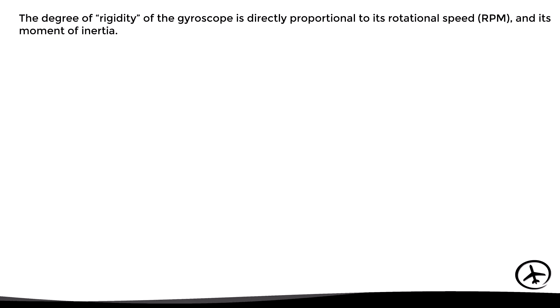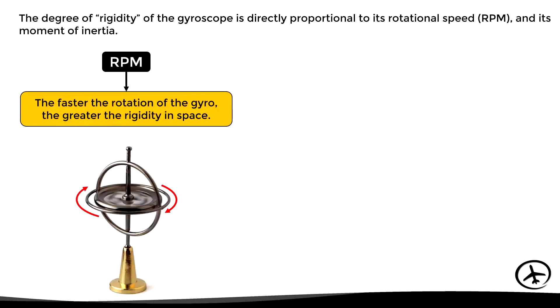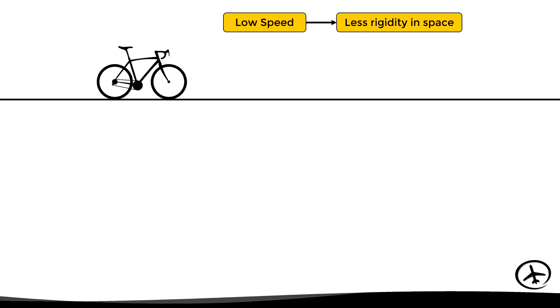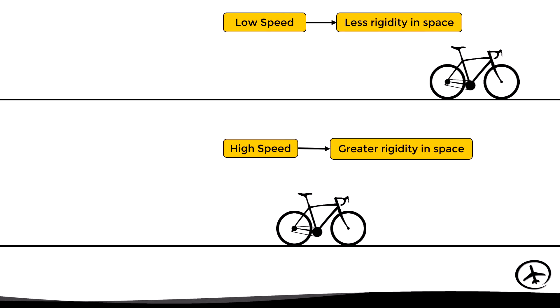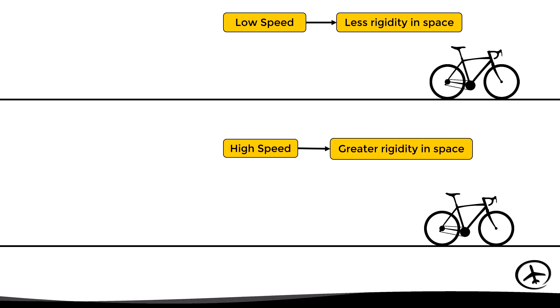The degree of rigidity of the gyroscope is directly proportional to its rotational speed or RPM and its moment of inertia. This means that the faster the rotation of the gyro, the greater the rigidity in space, and vice versa. We can even experience this in everyday life when riding a bicycle. If we ride at a low speed, the wheels will spin slowly, presenting less rigidity in space, making the bicycle less stable. On the other hand, if we ride at a higher speed, the wheels spin faster and the bicycle is more stable.